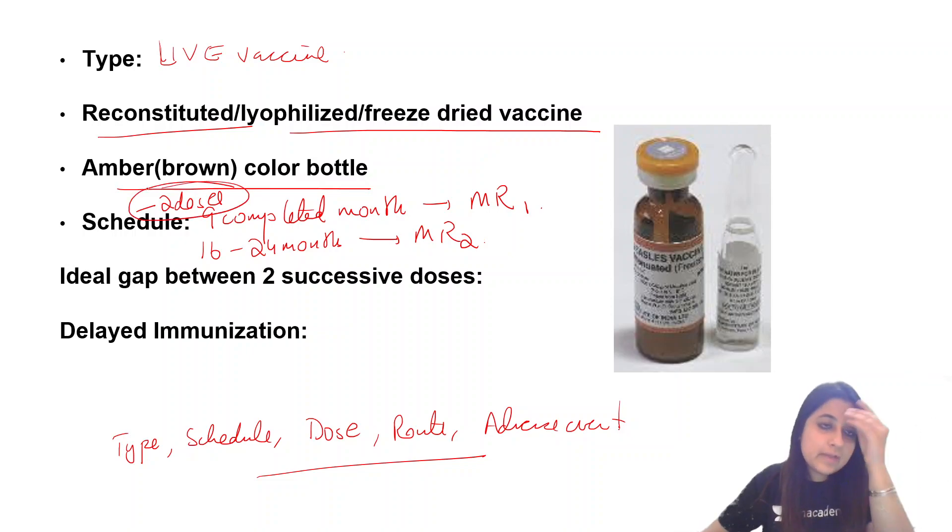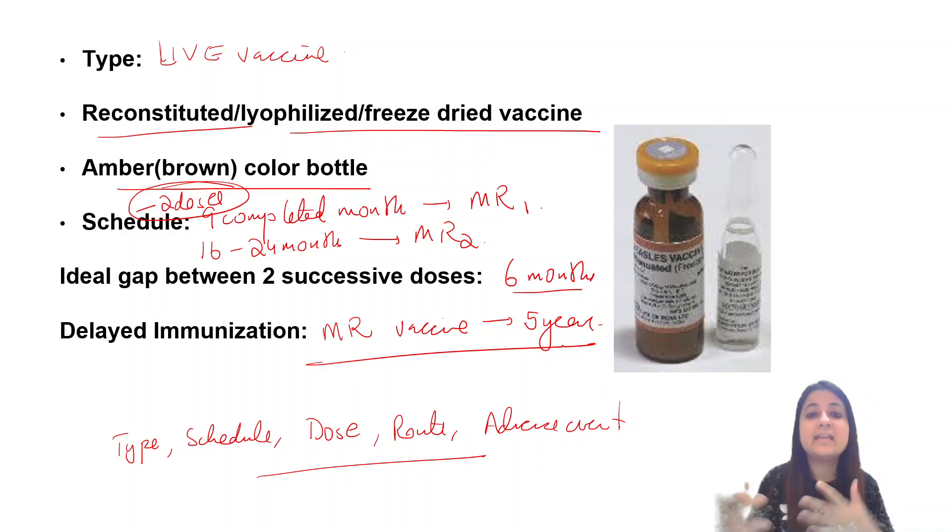If we maintain a gap between two successive doses, we keep it at six months. For delayed immunization, if a child didn't come at nine completed months but came later at 12-13 months, we're now giving it as MR vaccine, which can be given up to five years.